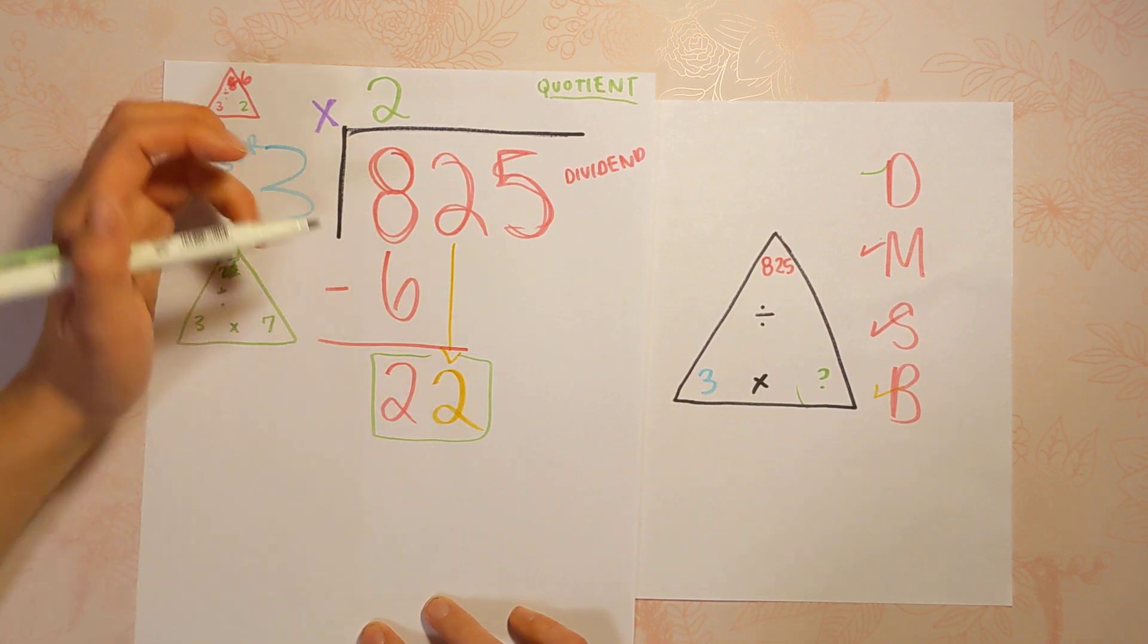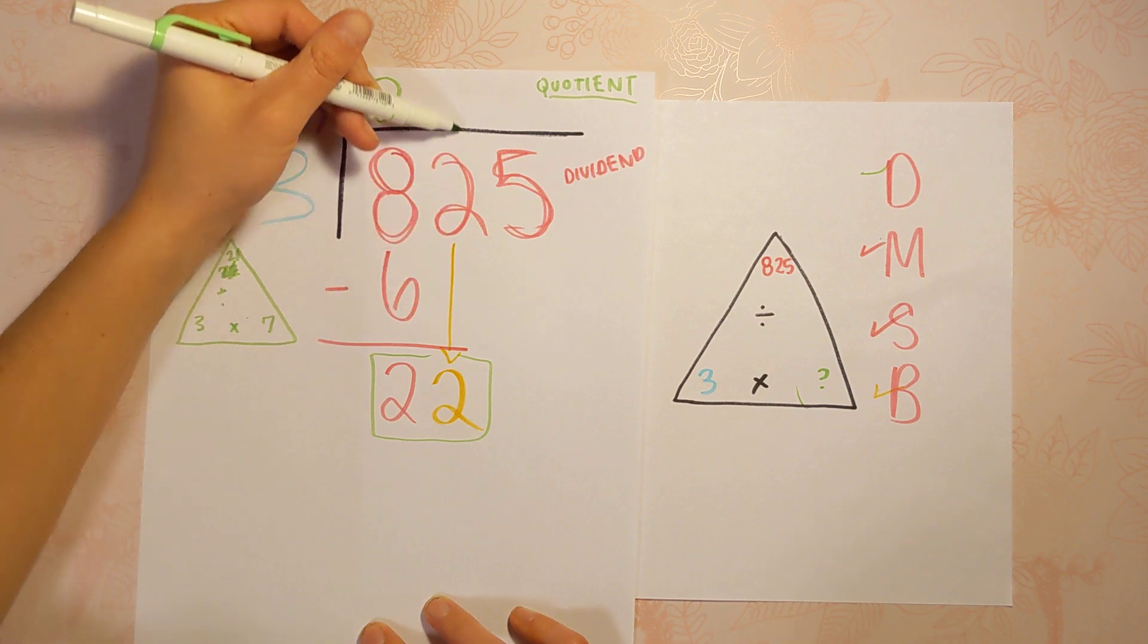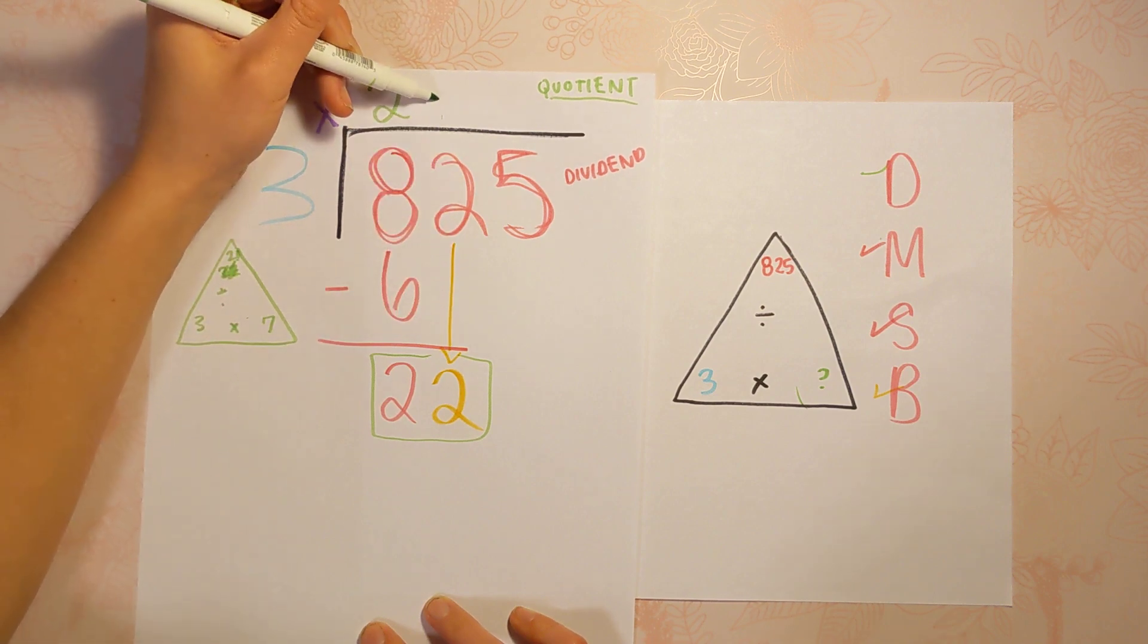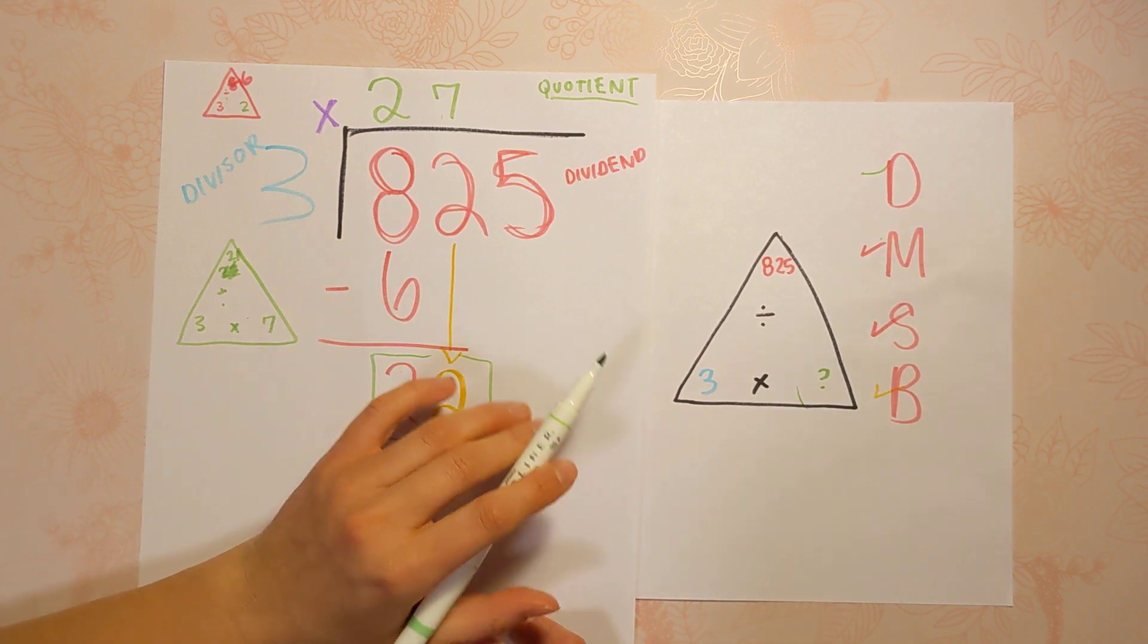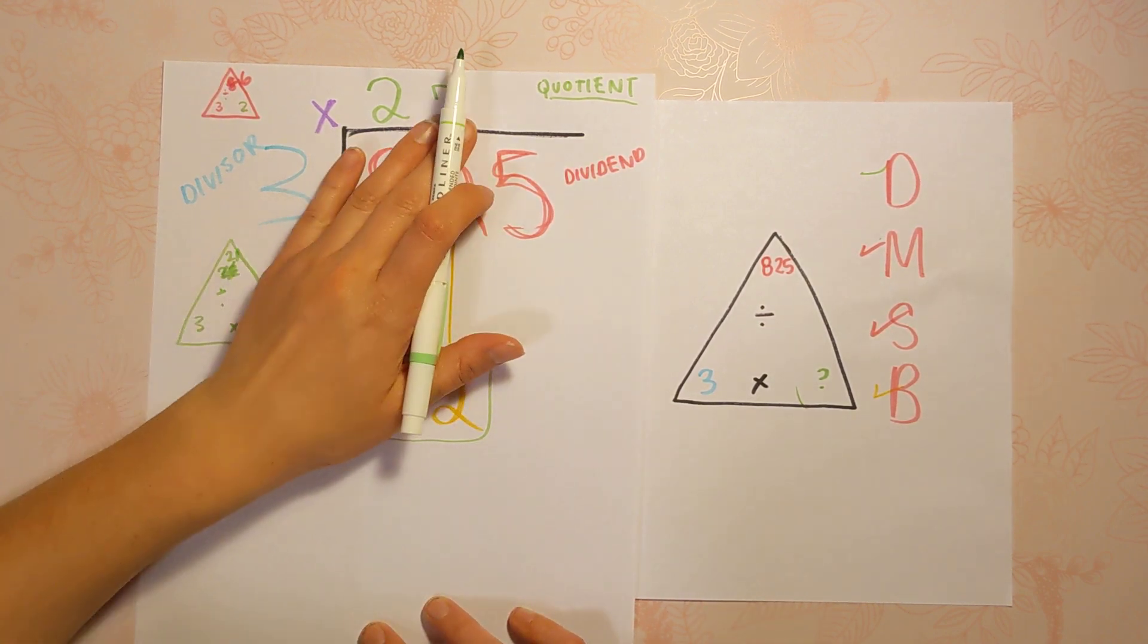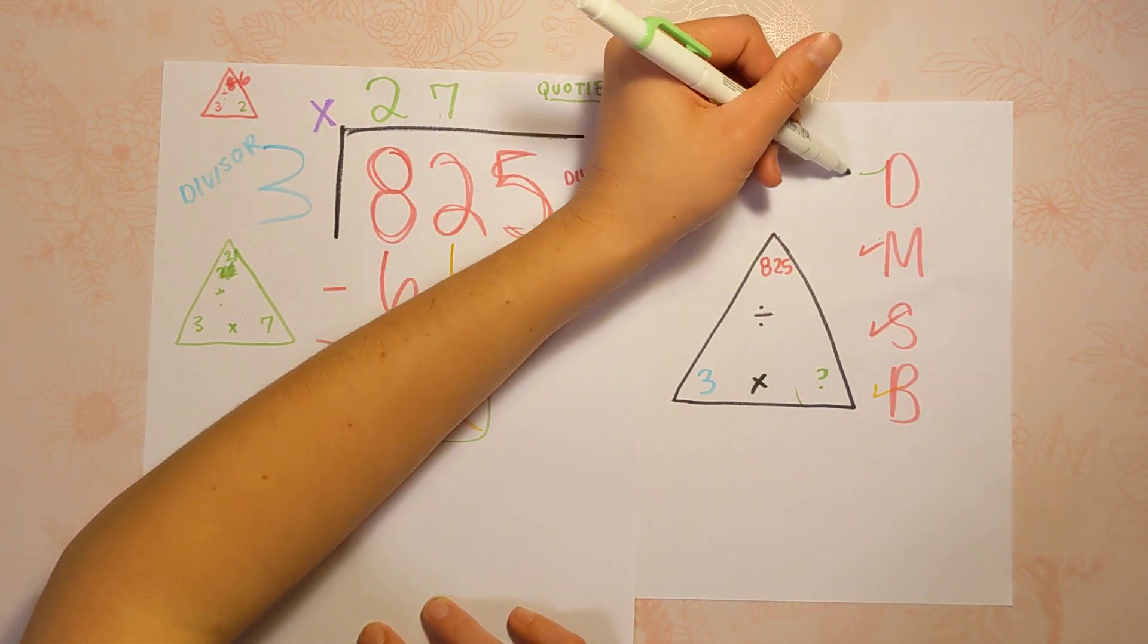So 3 can go into 22 seven times. And I'm going to put my next quotient answer right here. I'm keeping it nice and lined up. All right. So 22 divided by 3 is 7. That was this step.